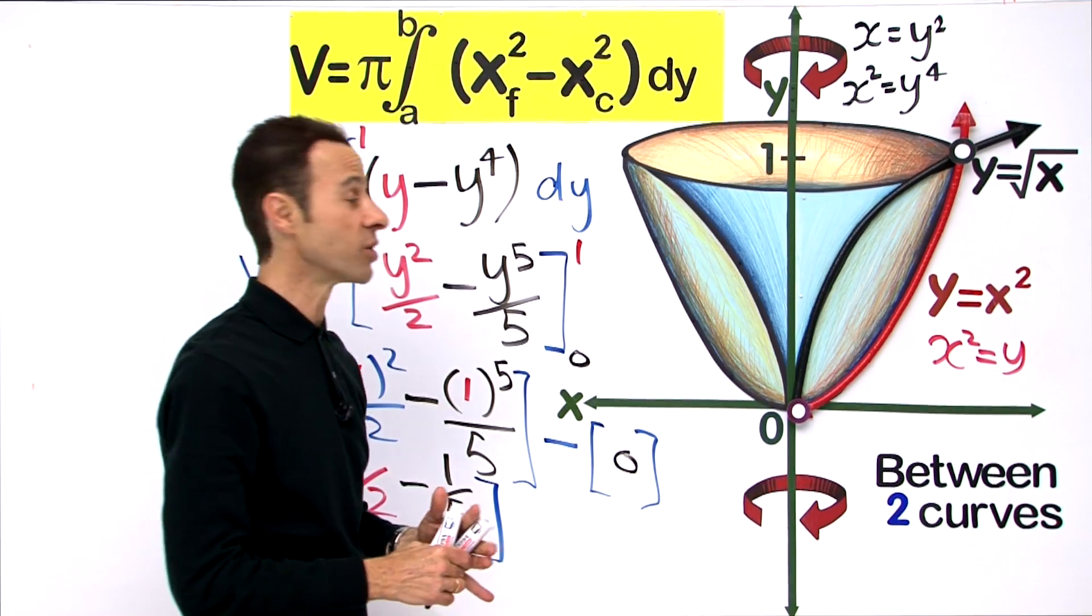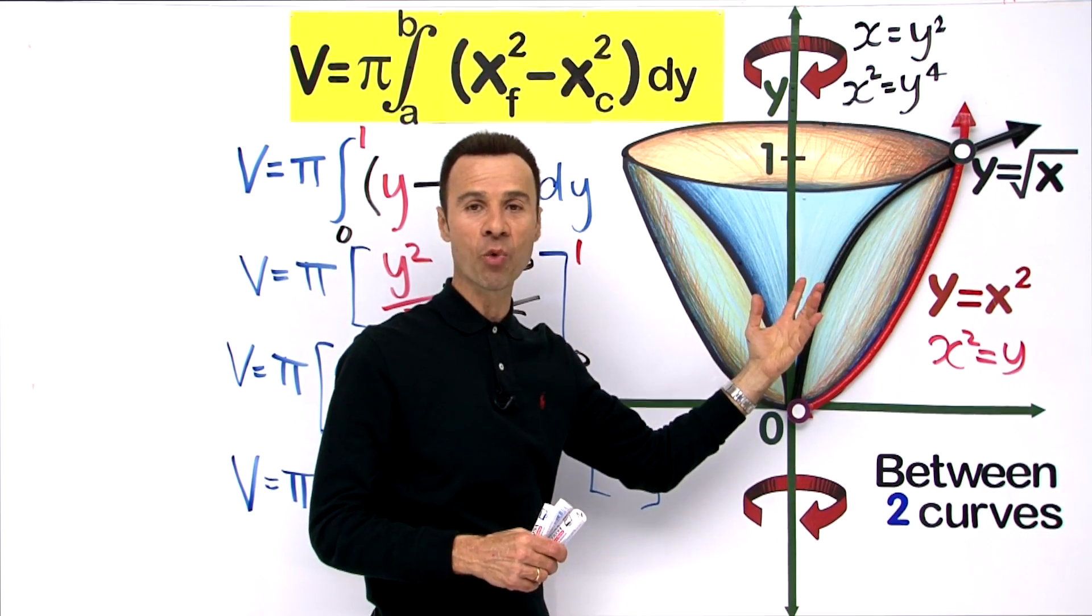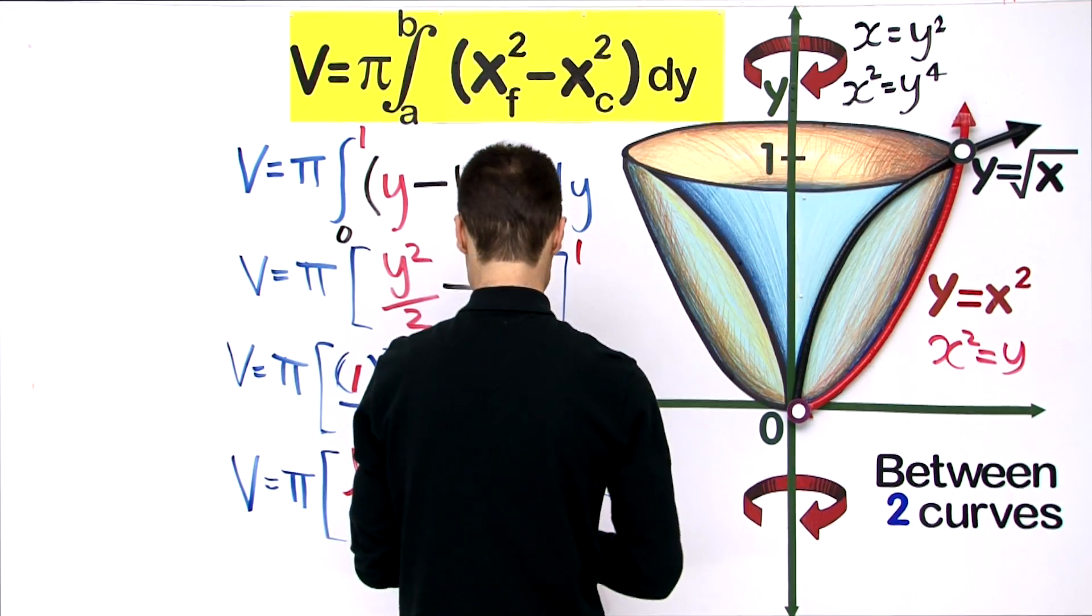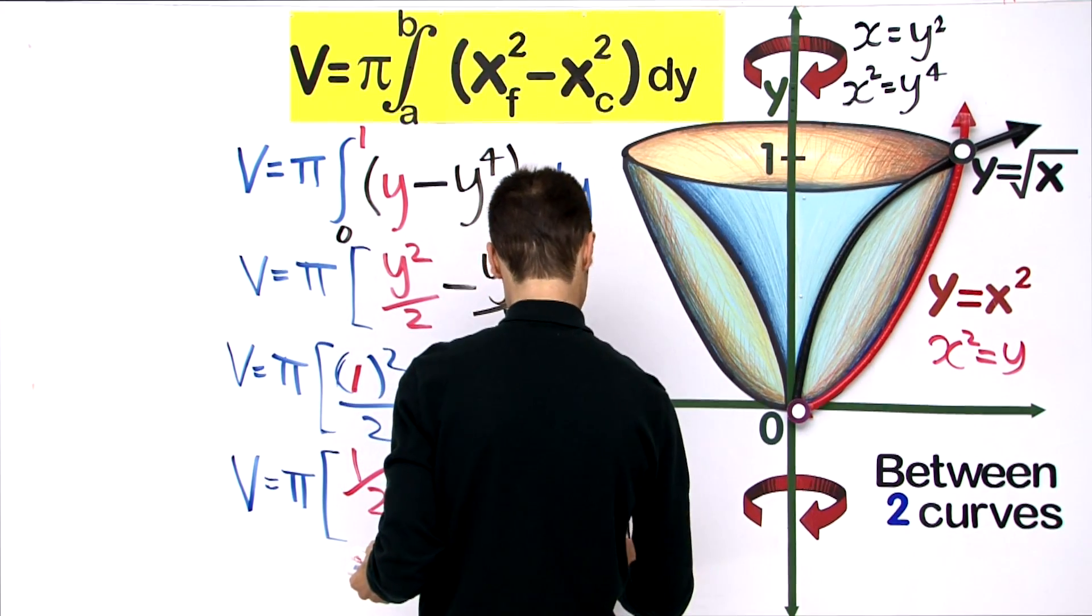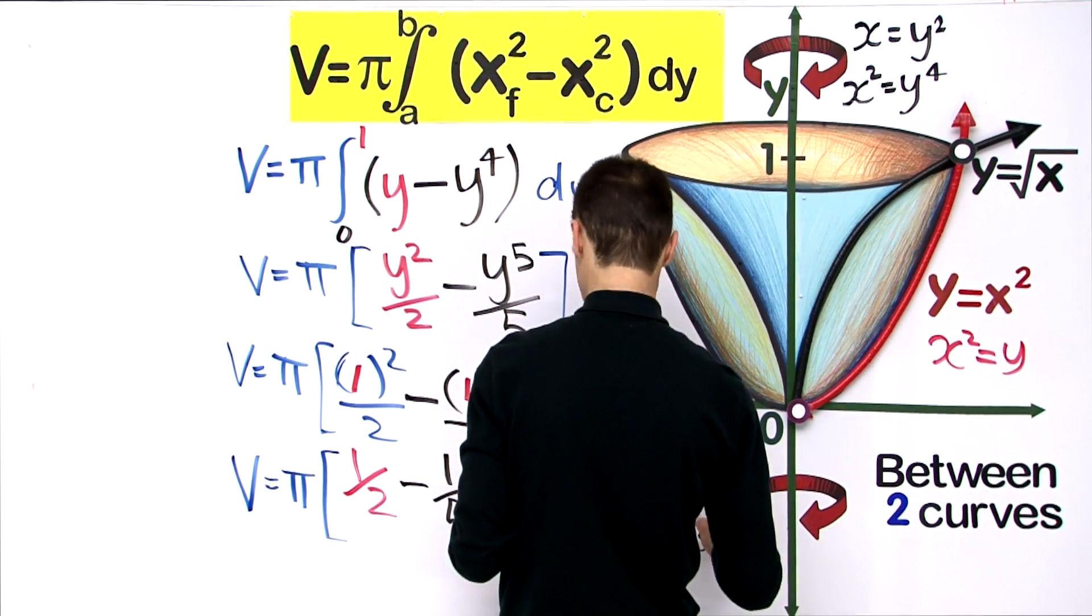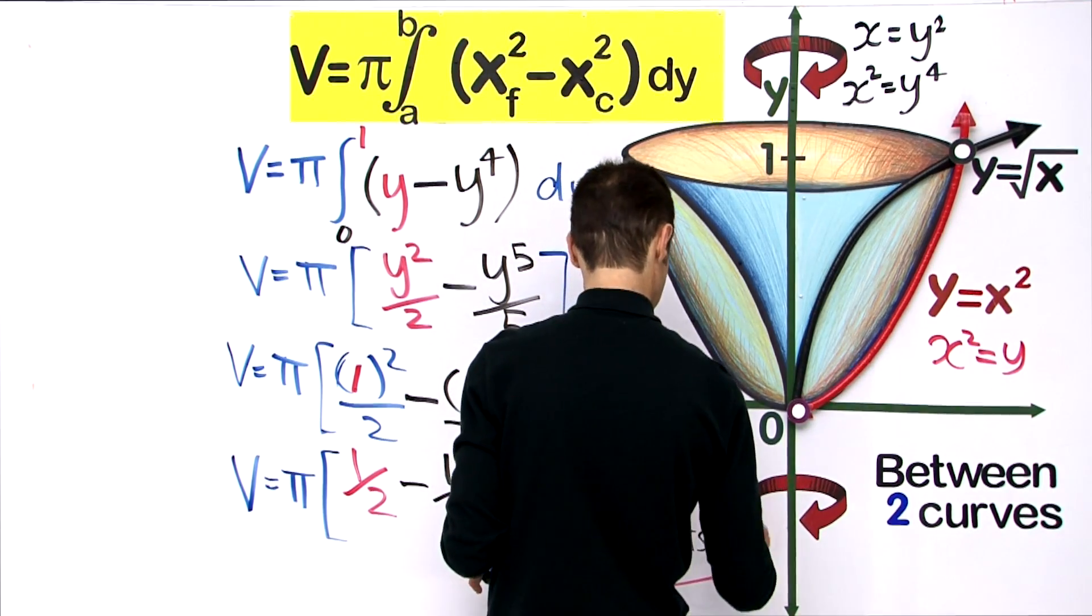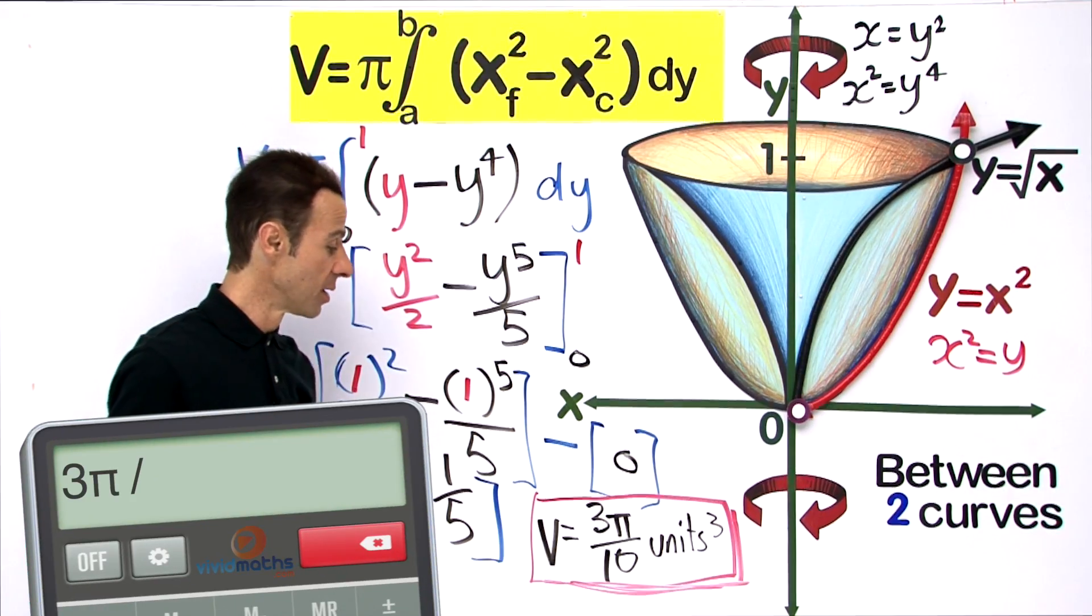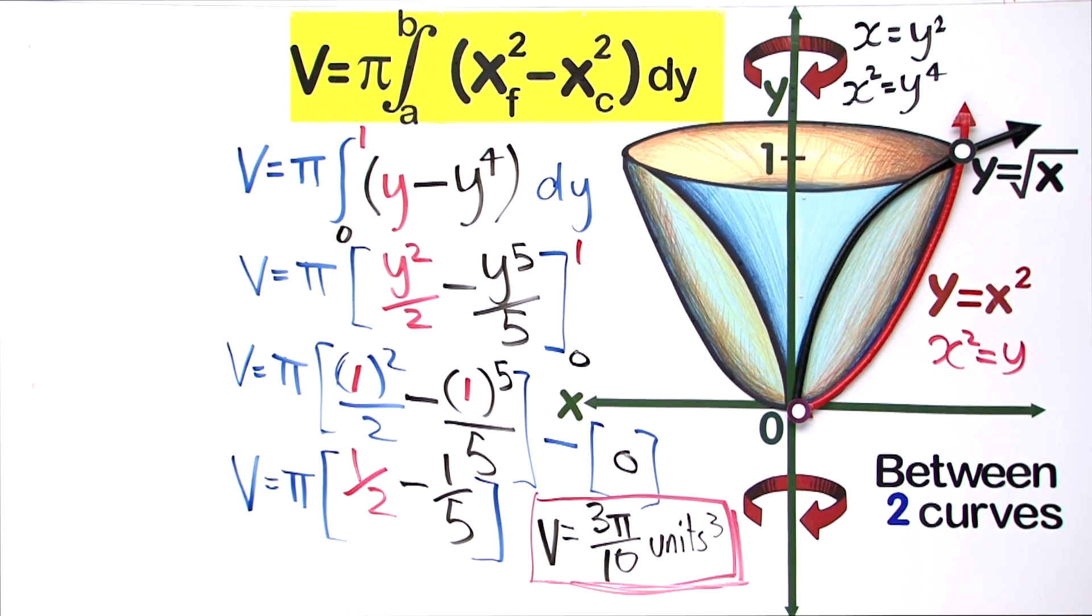The volume generated between the two curves, revolving and rotating around the y-axis, equals 3 pi over 10 units cubed.